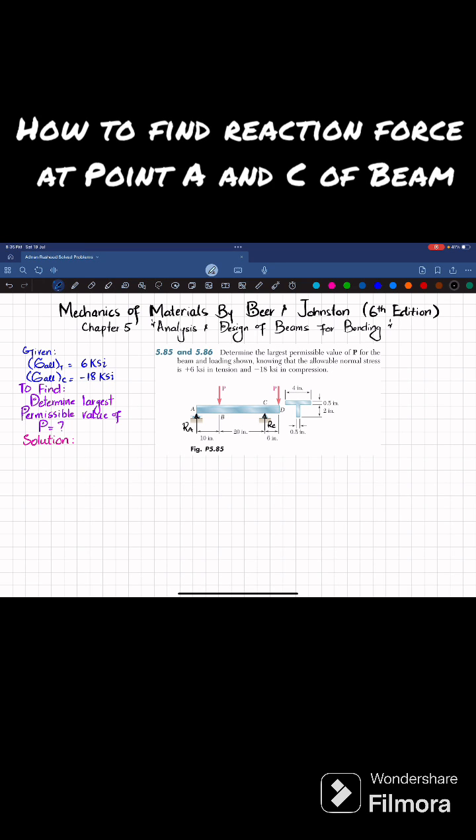We'll find Ra and Rc by using equations of equilibrium. The first equation of equilibrium is that sum of all moments about point C is equal to zero. About point C, this force is passing through Rc so it is not producing moment. Starting from A, the first force that is producing moment is Ra.